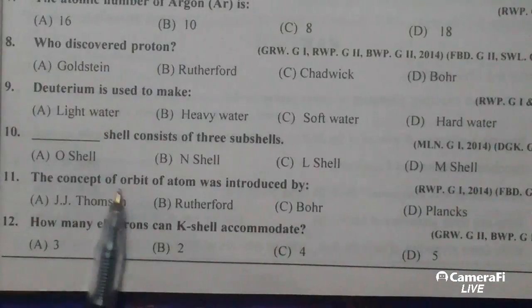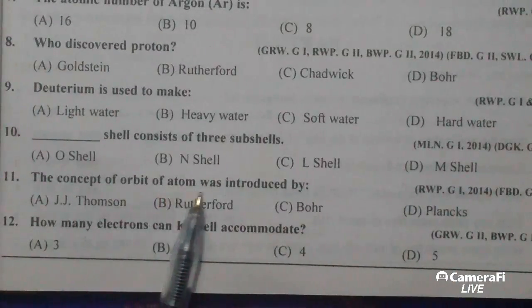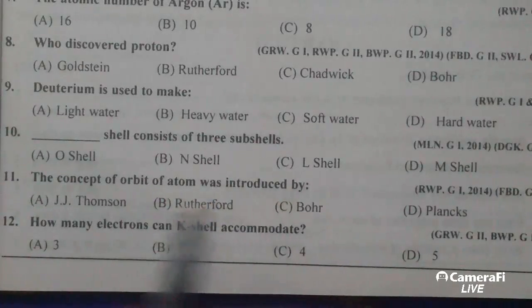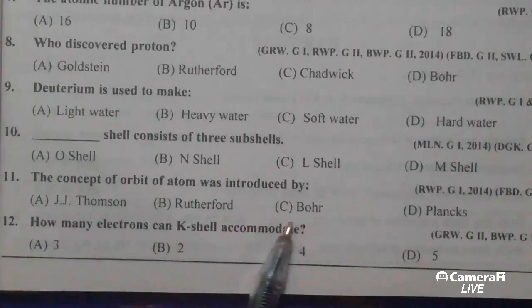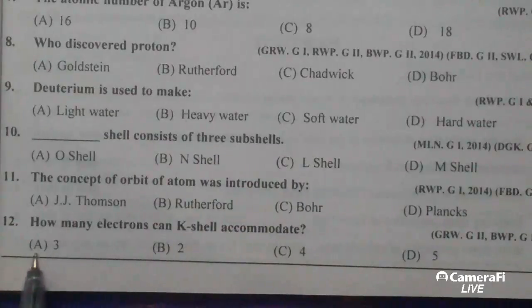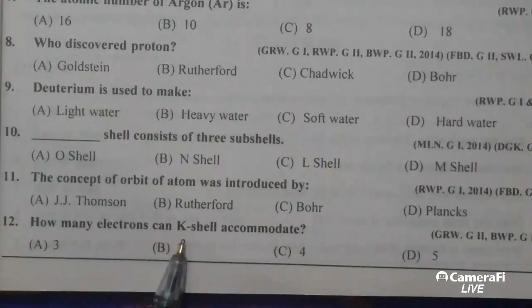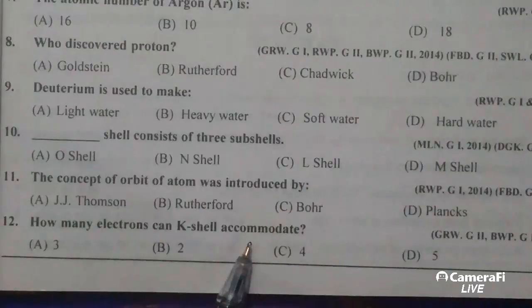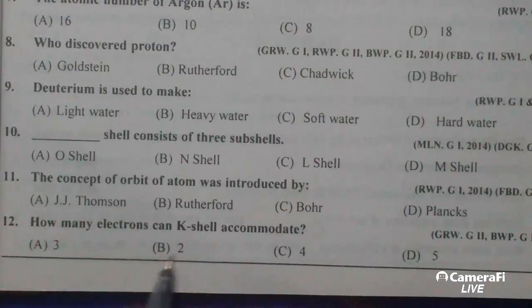The concept of orbit of an atom was introduced by Bohr. How many electrons can K shell accommodate? Two.